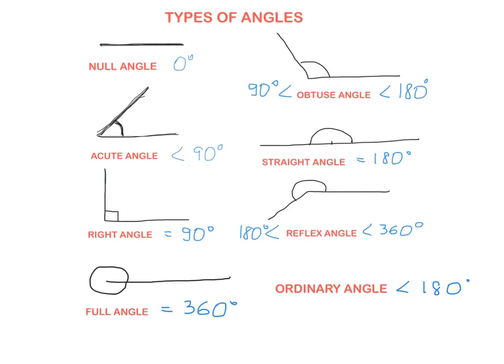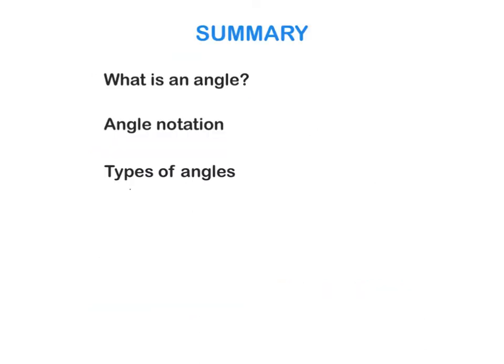The last keyword is 'ordinary angle' — this is every single angle less than 180 degrees. So an obtuse angle, an acute angle, and a right angle are all also ordinary angles. Make sure you know all the keywords, how to draw each type, how to mark it, and how many degrees each one has.